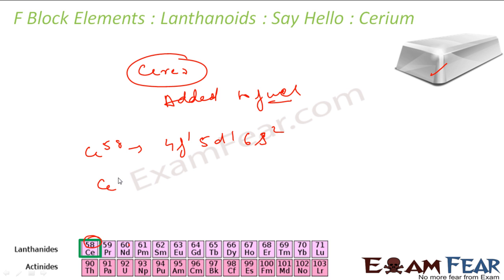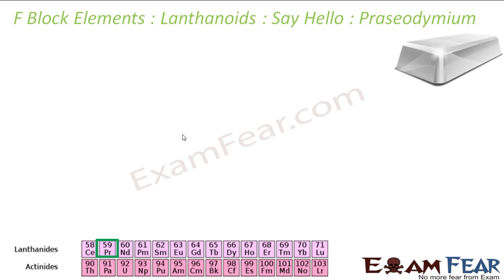For cerium 2+, electrons are removed from the outermost positions. For cerium 3+, electrons come from the same region, and for cerium 4+, electrons also come from that place. The next element is praseodymium.